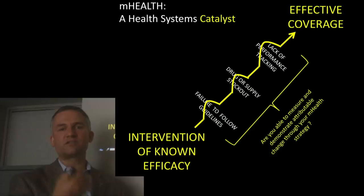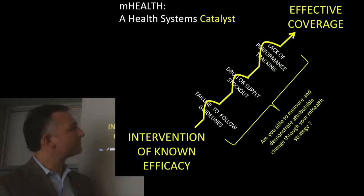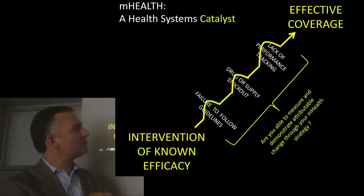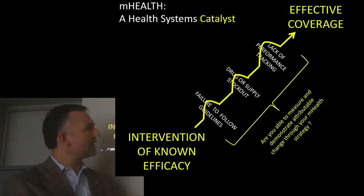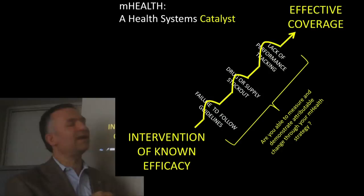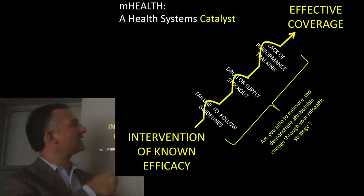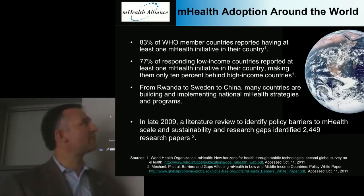mHealth can, in many ways, be seen as a way to fill these potholes or bridge these gaps that prevent us from reaching effective coverage. The real question we now ask our mHealth partners is: can you measure and demonstrate an attributable change that's directly a consequence of the mHealth strategy you're implementing? Is your mHealth improving adherence to guidelines? Is your mHealth system reducing supply stockouts? And is it improving the tracking and response to poor performance in the field? If so, then we can make that connection between what we know works and the effective coverage that can maximize impact in a population.